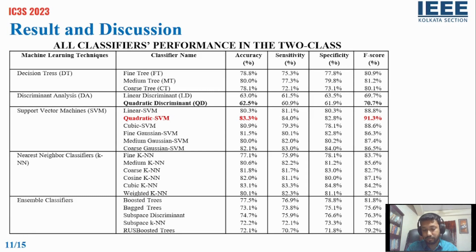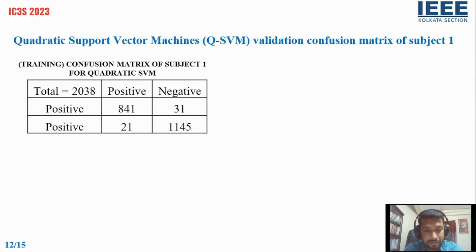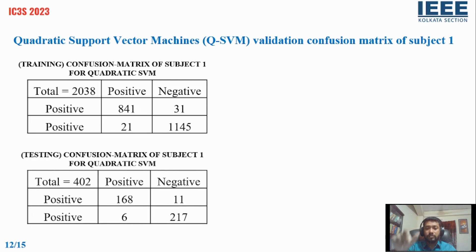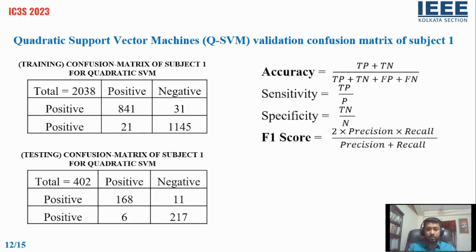In this confusion matrix table for subject one, for the training set, there were 841 positive epochs and 1145 negative epochs. Additionally, 21 negative epochs were incorrectly classified as belonging to positive epochs, and 31 positive epochs were incorrectly classified as belonging to negative epochs. The same approach was applied for testing. We evaluated the model using accuracy, sensitivity, and F1 score — those are the formulas we used.